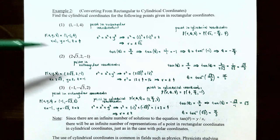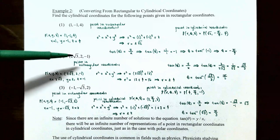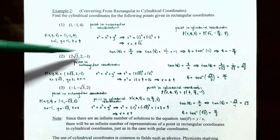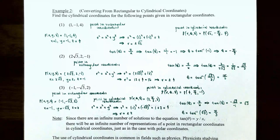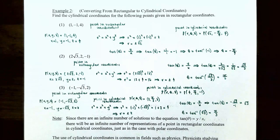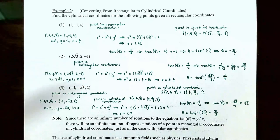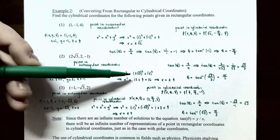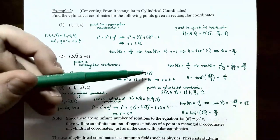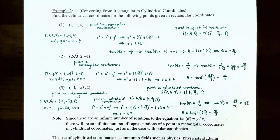Number two: the point (2√3, 2, −1) in rectangular coordinates. We already know z equals negative 1. To find r, use r squared equals x squared plus y squared: r squared equals (2√3) squared plus 2 squared equals 12 plus 4 equals 16, so r equals plus or minus 4. We'll take r to be positive 4.